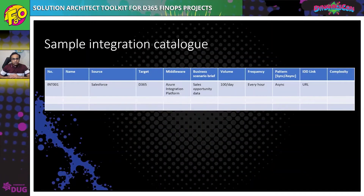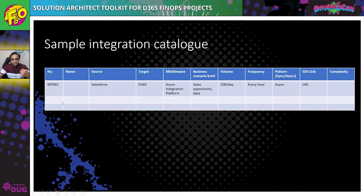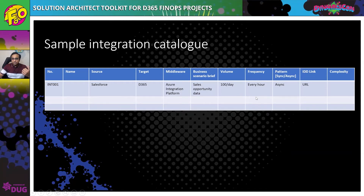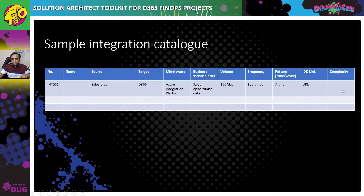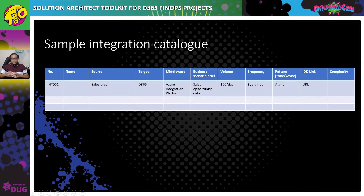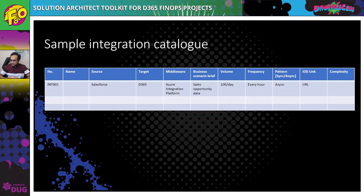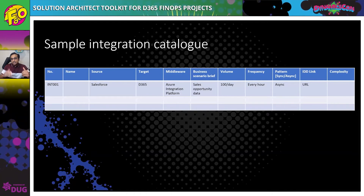A sample integration catalog may look like this: define each integration with a unique reference number, then capture the source system, target system, middleware, a brief description of the business scenario, the expected volume, and the expected frequency. These help you determine the integration pattern. You can also store a link to the detailed integration design document and capture the complexity of the integration. As a solution architect, having this view gives you good information handy for discussions with Microsoft, the customer, or your own team, and lets you track progress. Start defining the structure from the beginning of the project and keep maturing it as you progress.